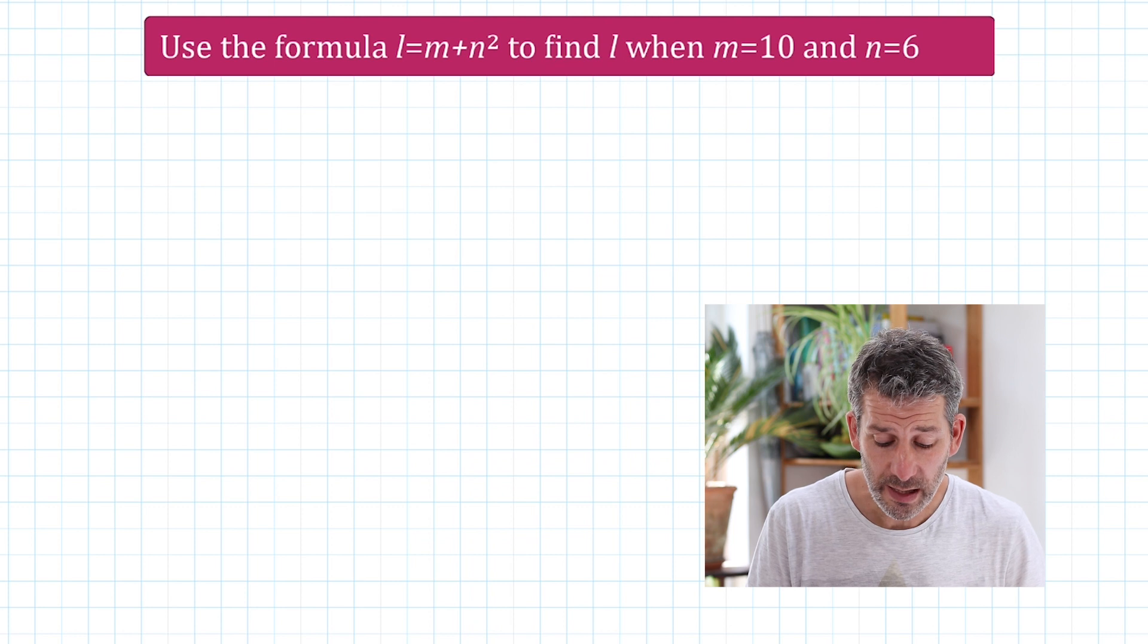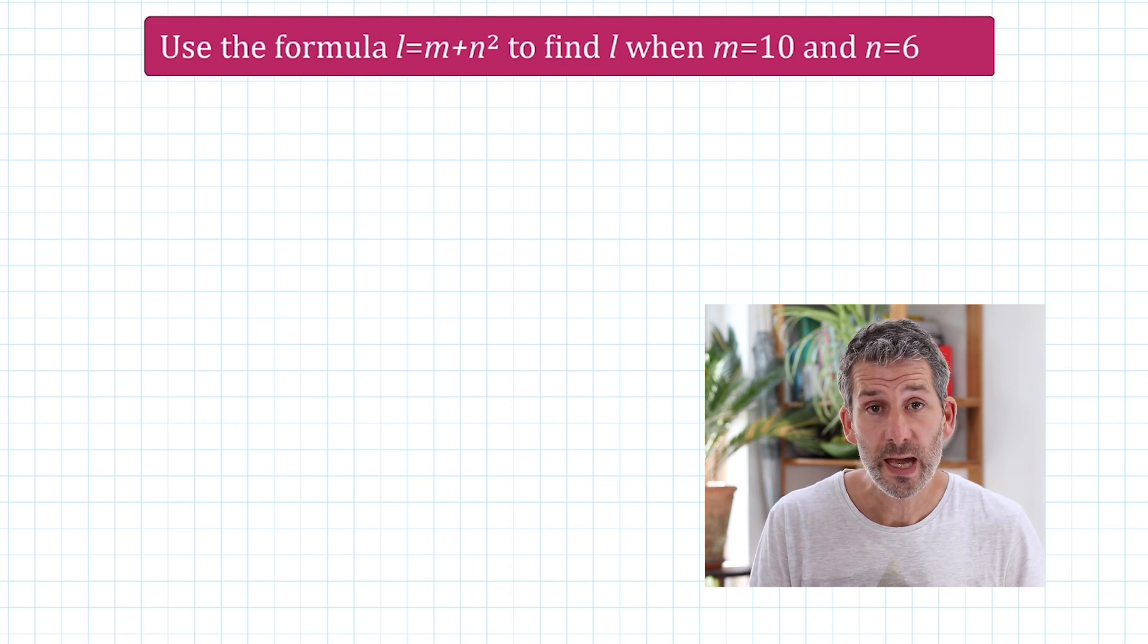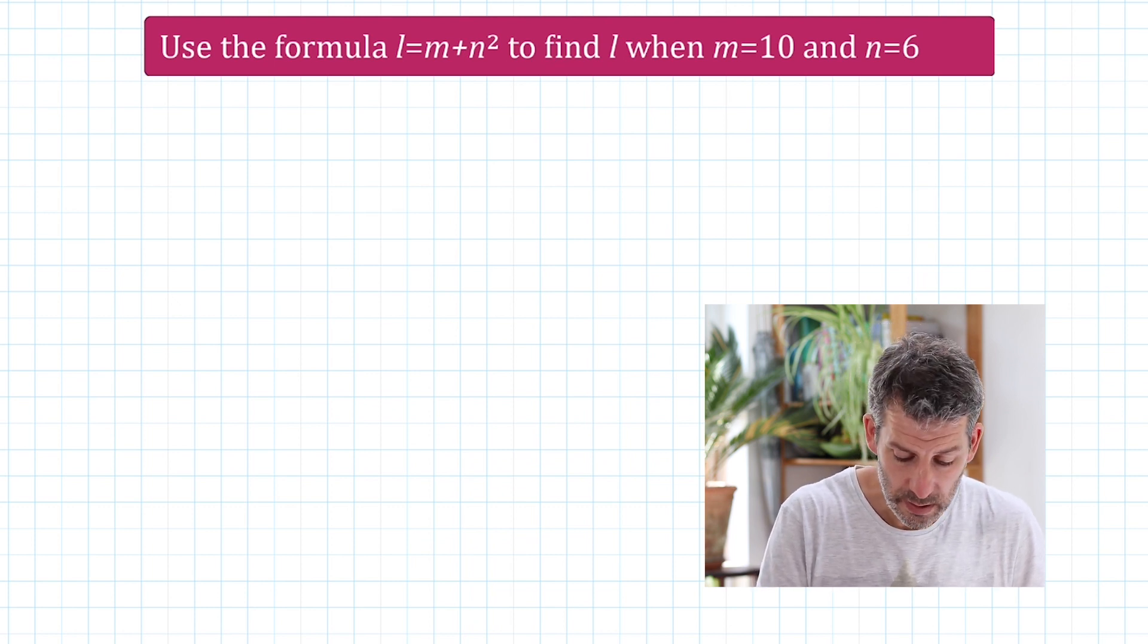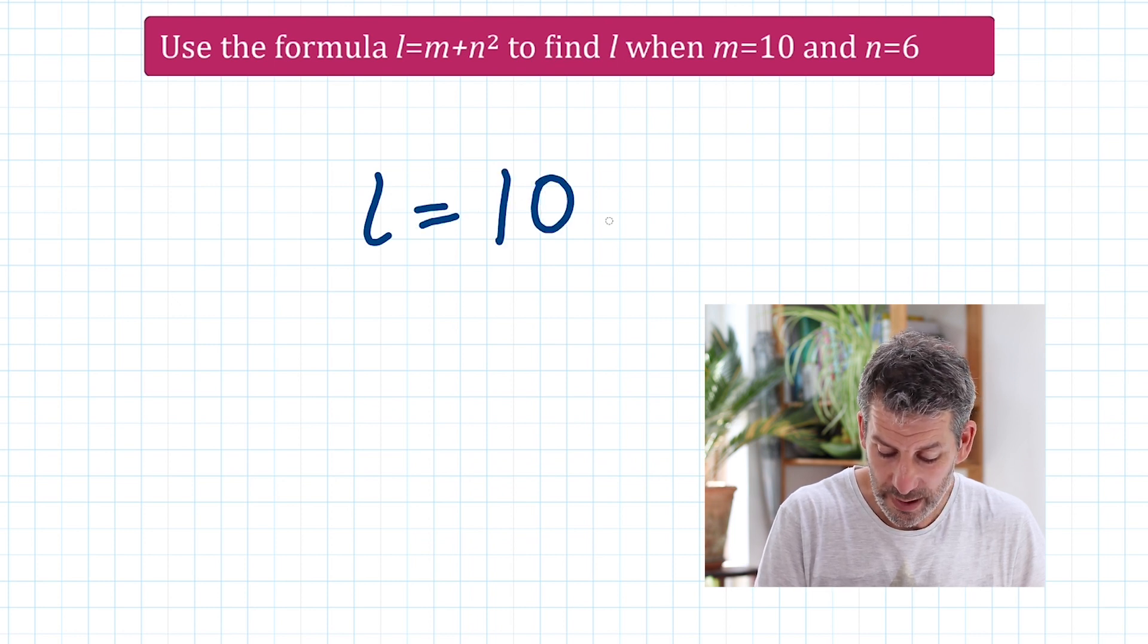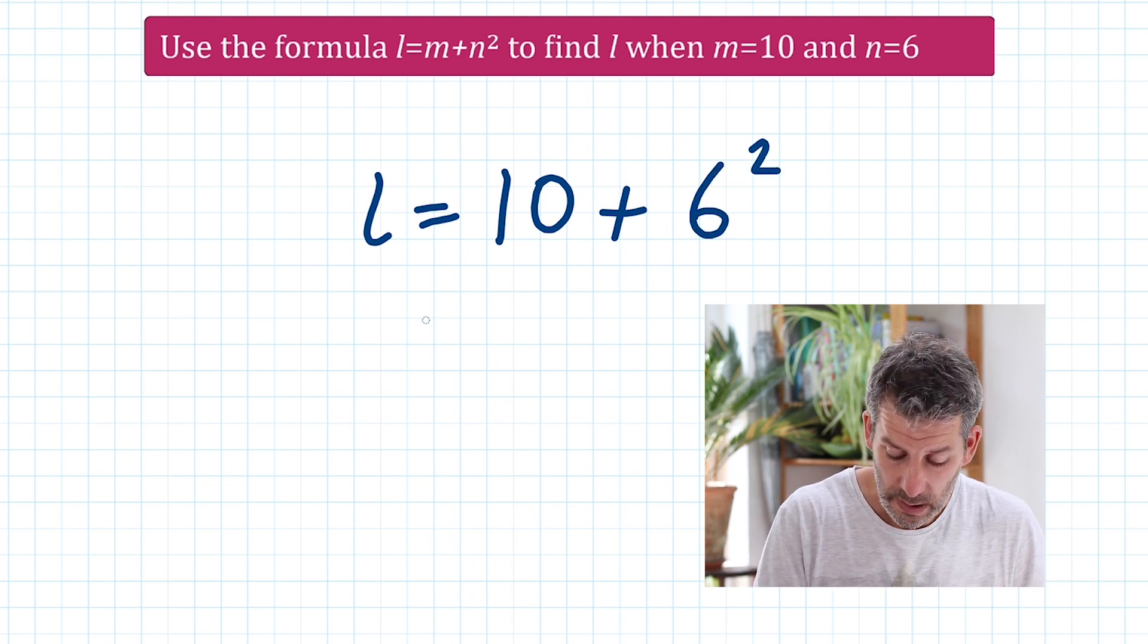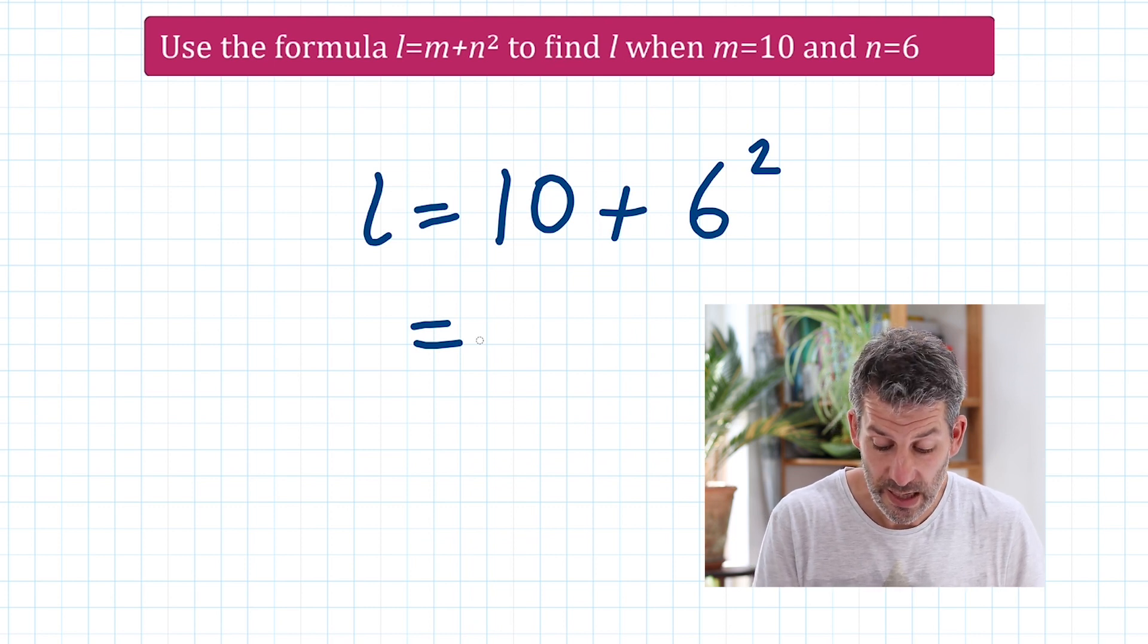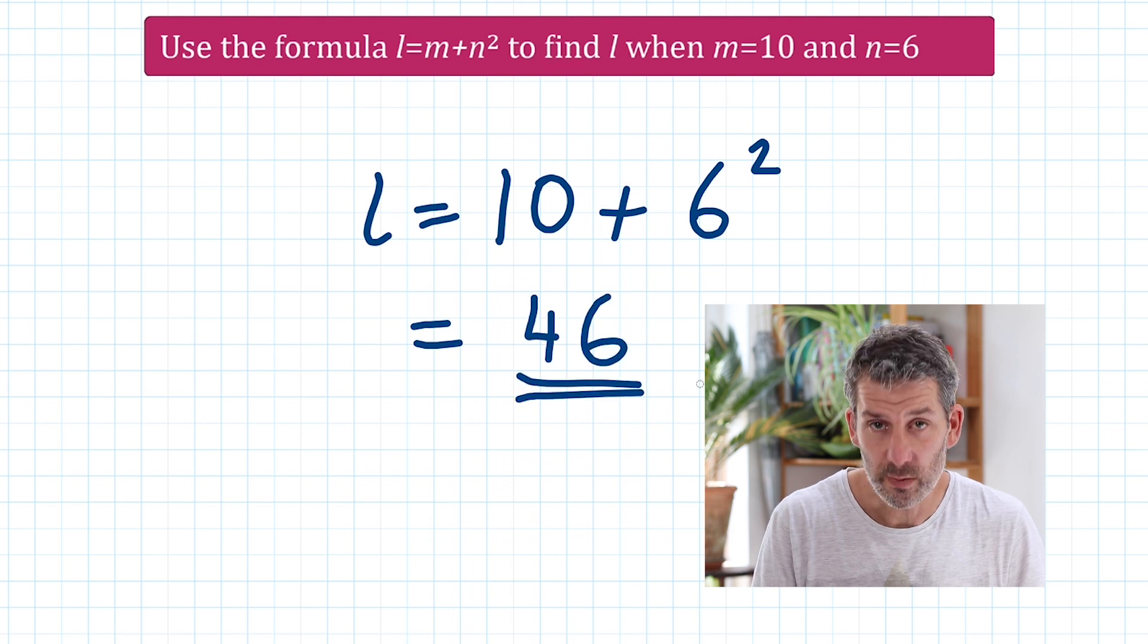Use the formula L equals M plus N squared to find L when M equals 10 and N equals 6. Okay, so we're just going to replace the letters M and N with the numbers that we've been given. So L is equal to, M is 10, so 10 plus N squared. N is 6, so 6 squared. So L will be 10 add 6 squared. 6 squared just means 6 times 6, which is 36. So 10 add 36, which is 46. So L is equal to 46.